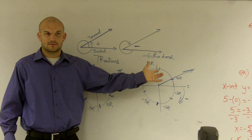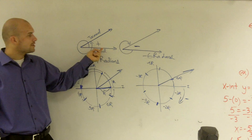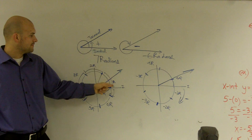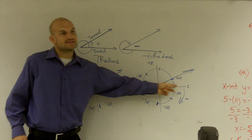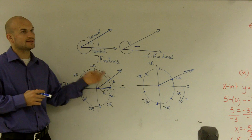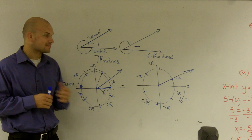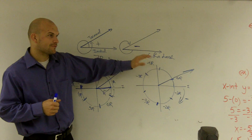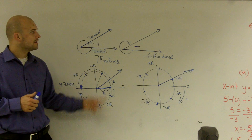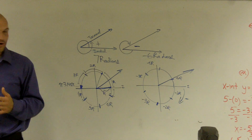Make sure you remember a couple of things: start on your initial side, which is right here. If it's positive you're going in the counterclockwise direction, and if it's negative you're going in the clockwise direction. On your unit circle, it would be helpful for you guys to map out the radians. That's how you estimate the degree of your angle using radians.